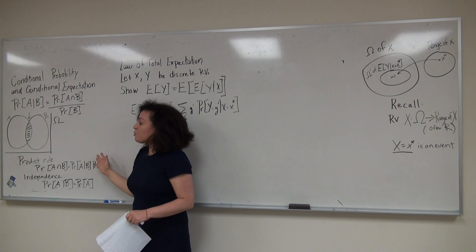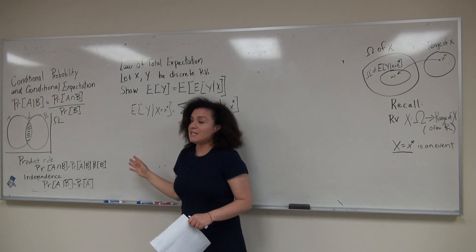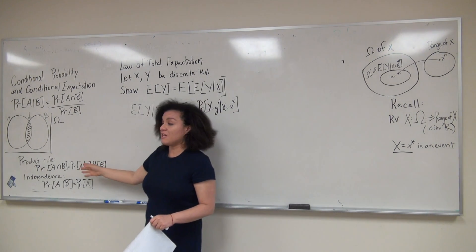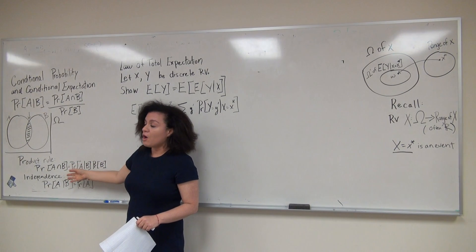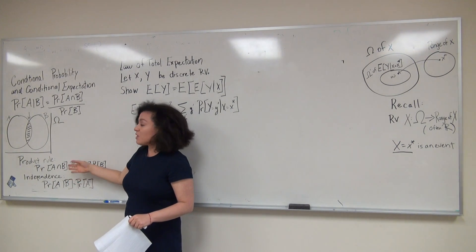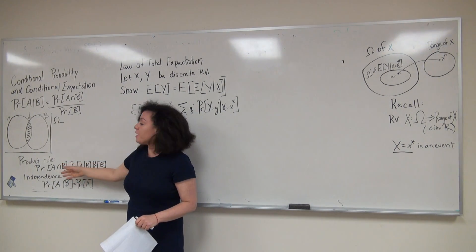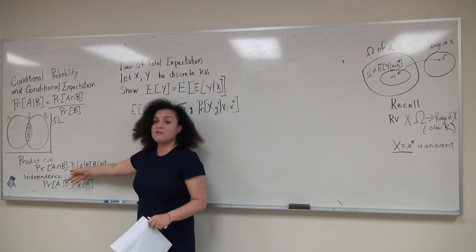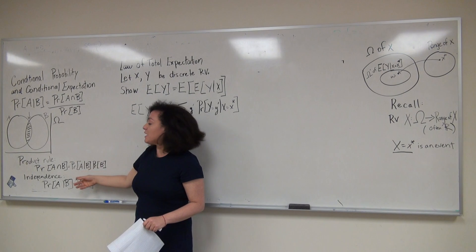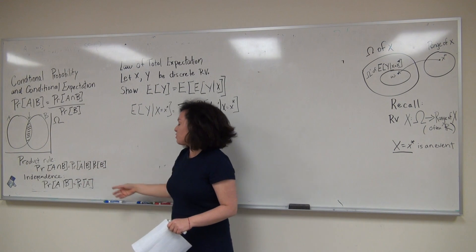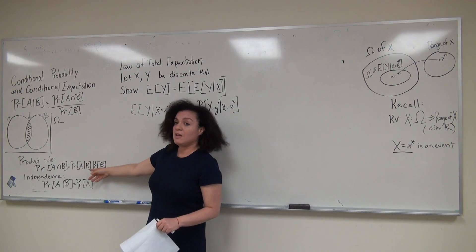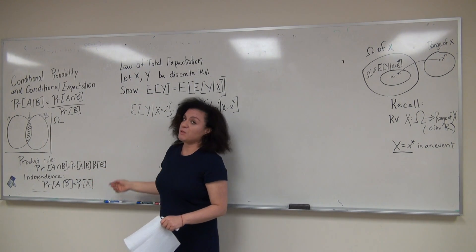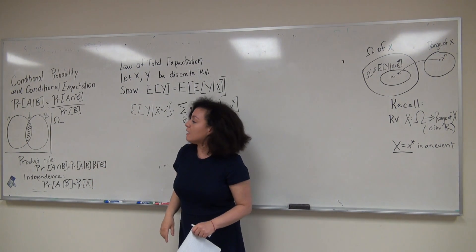Conditional probability is extremely useful for finding the probability of the intersection of two events when we use the product rule. The probability of the intersection of two events A and B is equal to the probability of A given B times the probability of B.